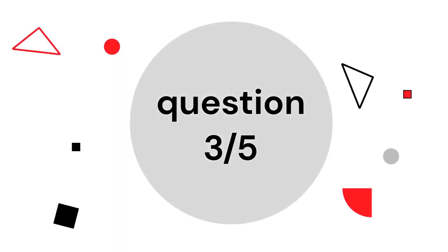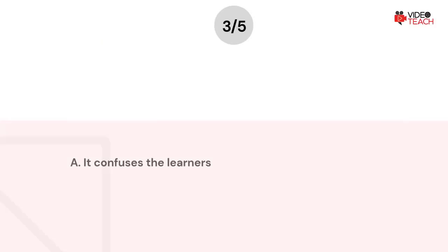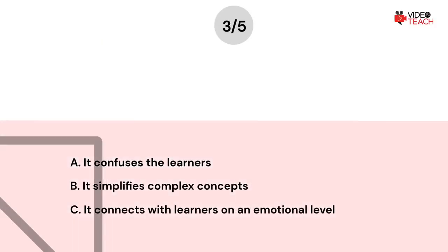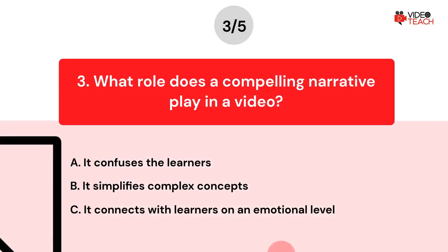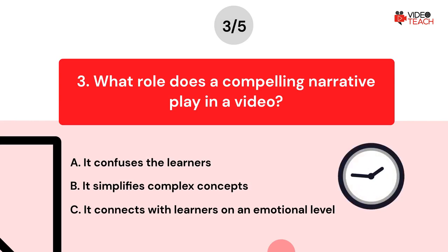Question number three. What role does a compelling narrative play in a video? Option A: It confuses the learners. Option B: It simplifies complex concepts. Option C: It connects with learners on an emotional level. Now you have about 15 seconds to think about your answer.